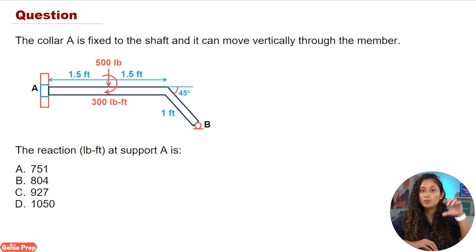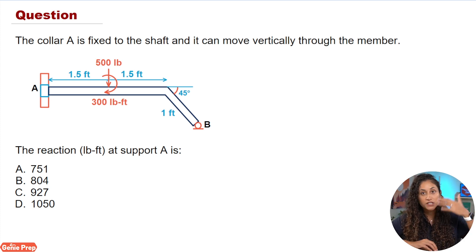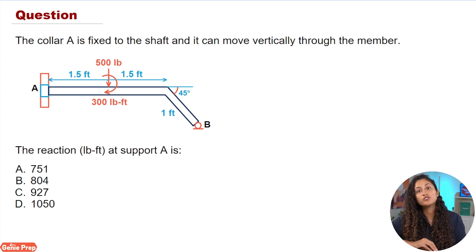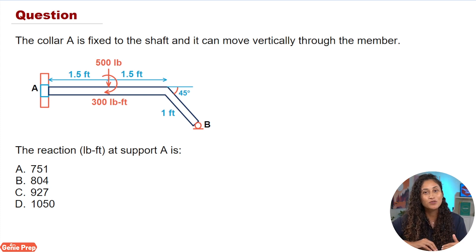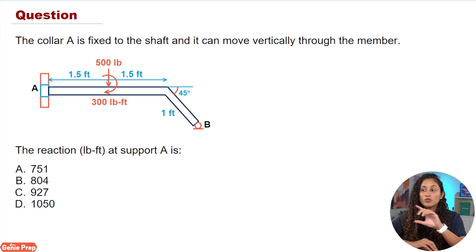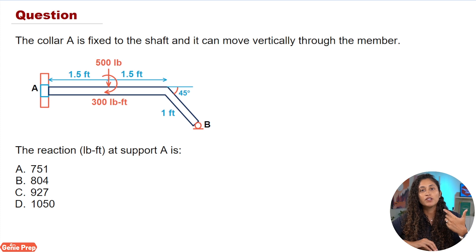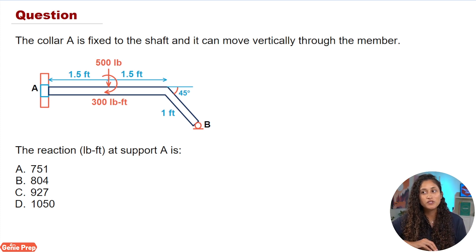Be careful because at support A the collar moves vertically, so just keep that in mind. Once you have all your reaction forces, the next step is to set up the summation of forces in the Y direction to find the reaction at B. After that, set up the moment equation to find the support at A.